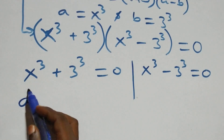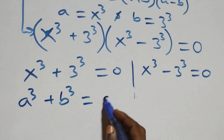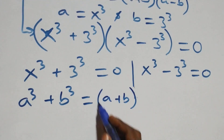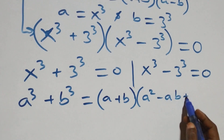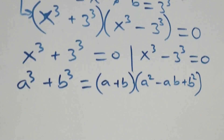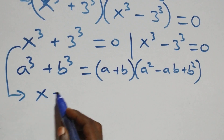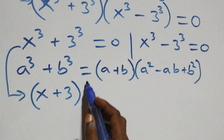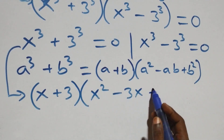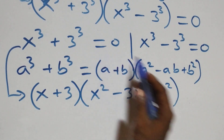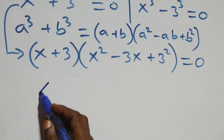Solving from the first case: this follows the sum of cubes identity — a raised to power 3 plus b raised to power 3 equals a plus b, times a squared minus ab plus b squared. Applying this, we get x plus 3 in brackets, times x squared minus 3x plus 3 squared, in brackets, equals 0.